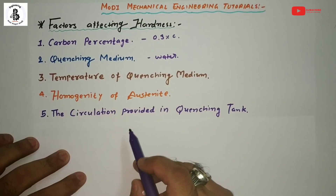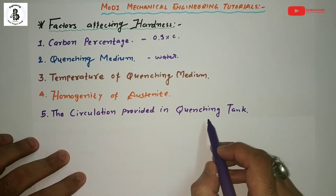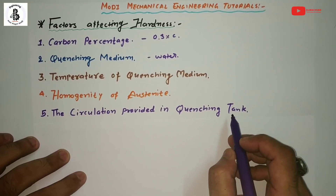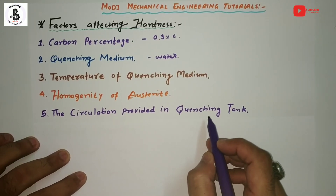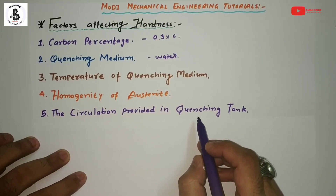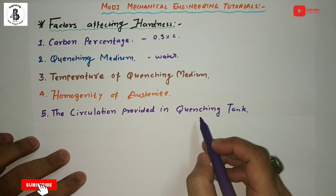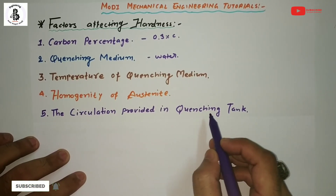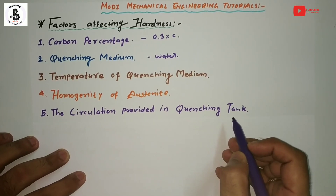Fifth factor: circulation provided in the quenching tank. Proper circulation of the oil within the quenching tank ensures effective heat removal. This is also very effective in increasing the quenching rate and ultimately the hardness of the steels.